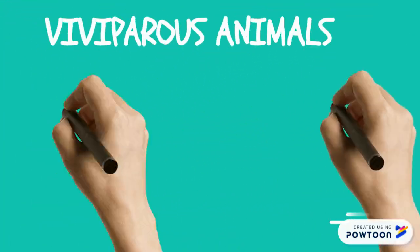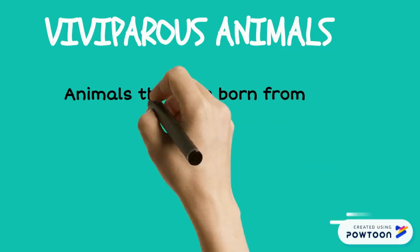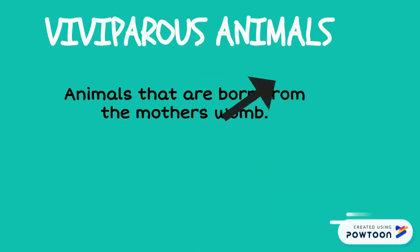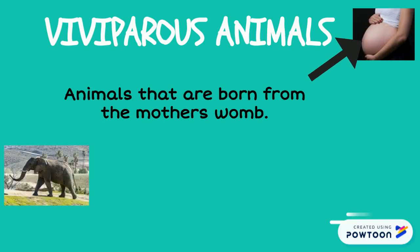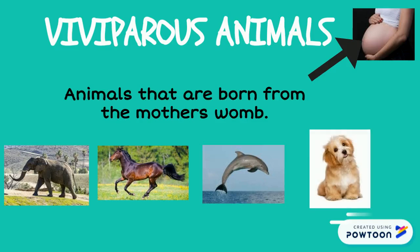Viviparous animals are animals that are born from the mother's womb. Like for example, elephants, horses, dolphins, or dogs. Or even you — you've been born from your mommy's womb.